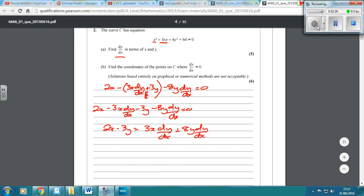Then we're going to factorise out the dy by dx, leaving you with dy by dx times by 3x plus 8y, 2x minus 3y. And then we've got dy by dx equals 2x minus 3y over 3x plus 8y.